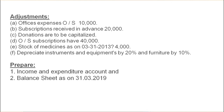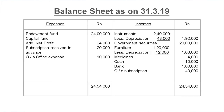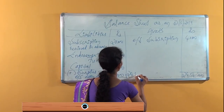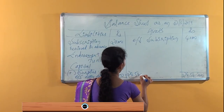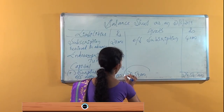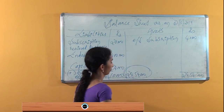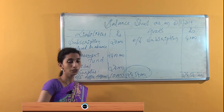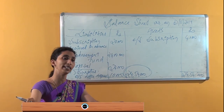We now tally the liability and asset sides. The tally comes to rupees 24,54,000. This is the tally answer, confirming that the balance sheet is balanced.